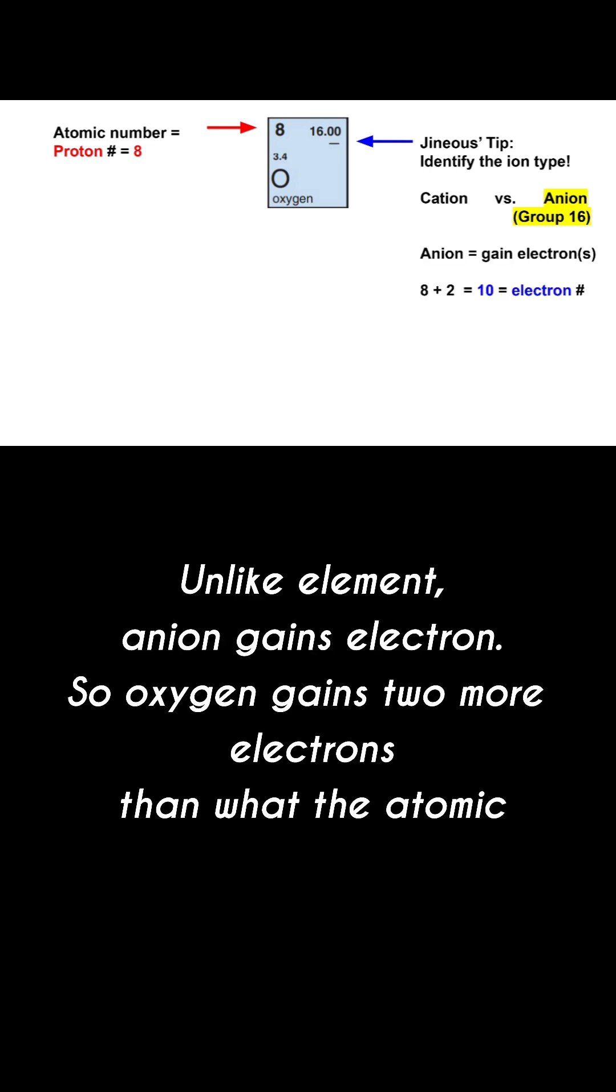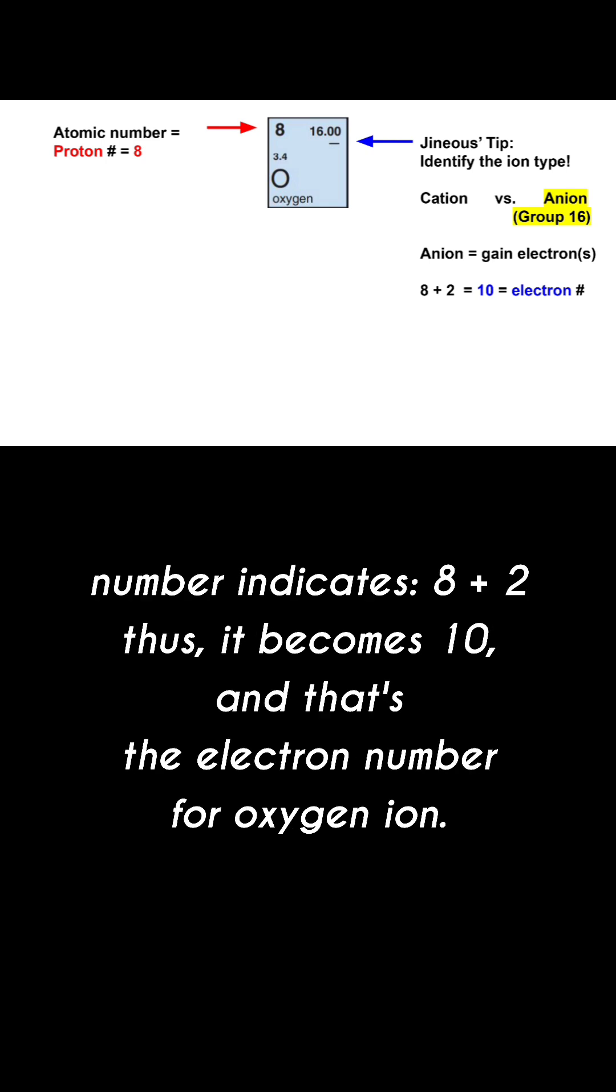Unlike element, anion gains electron so oxygen gains two more electrons than what the atomic number indicates. Eight plus two becomes ten and that's the electron number for oxygen ion.